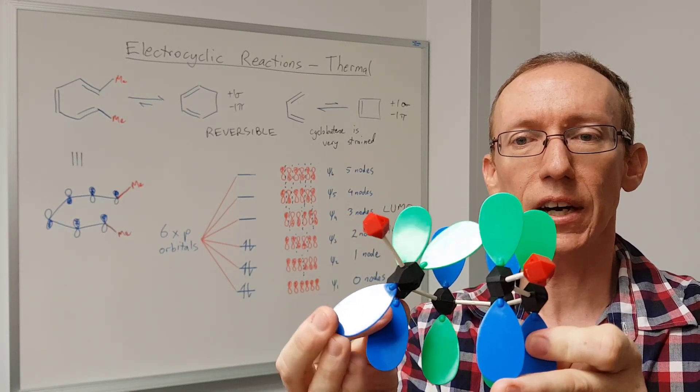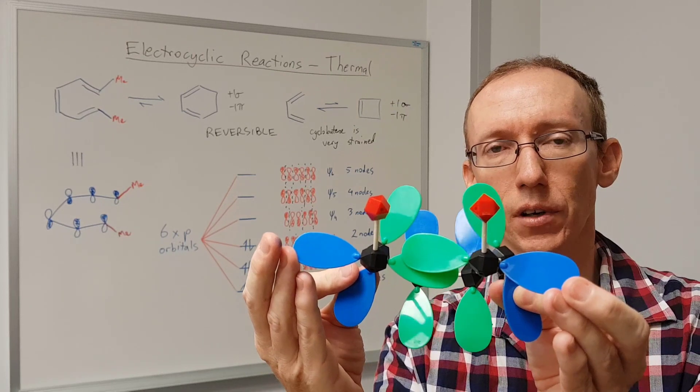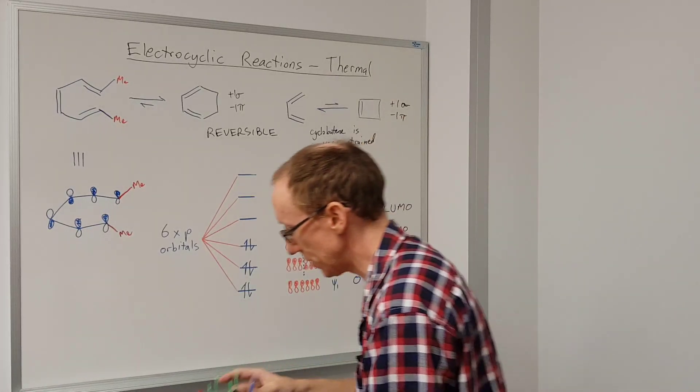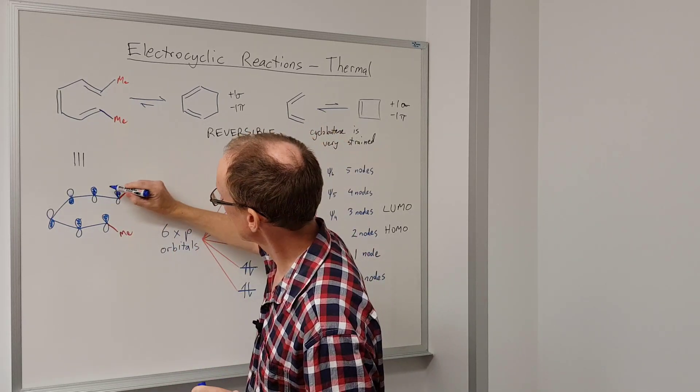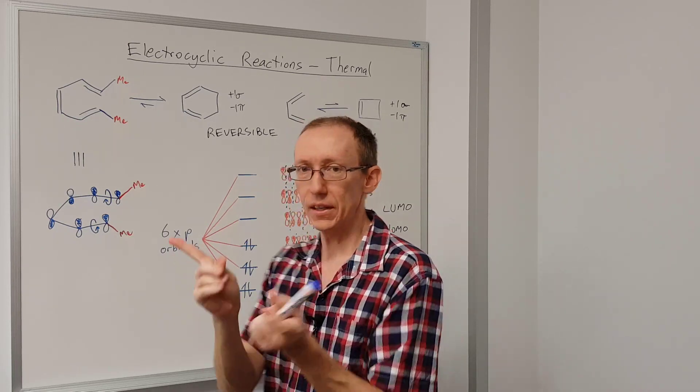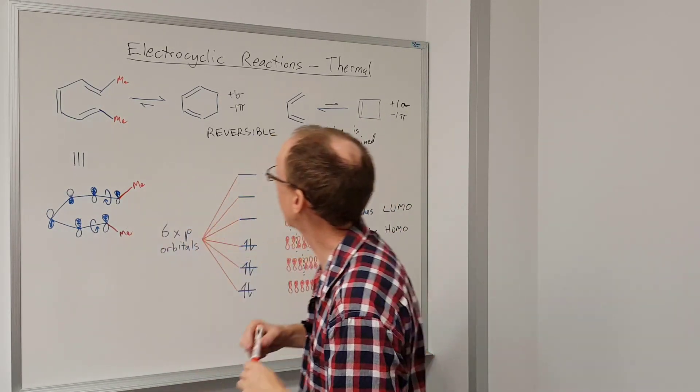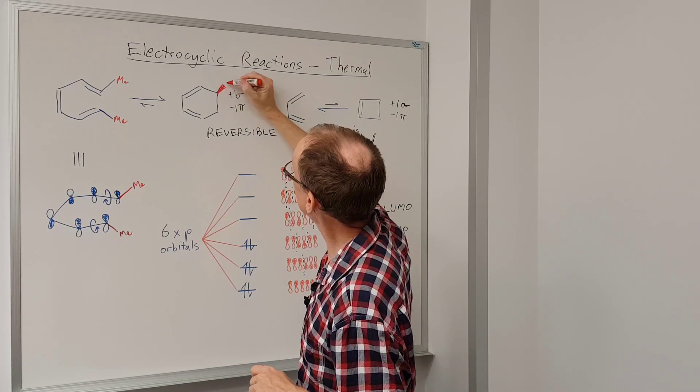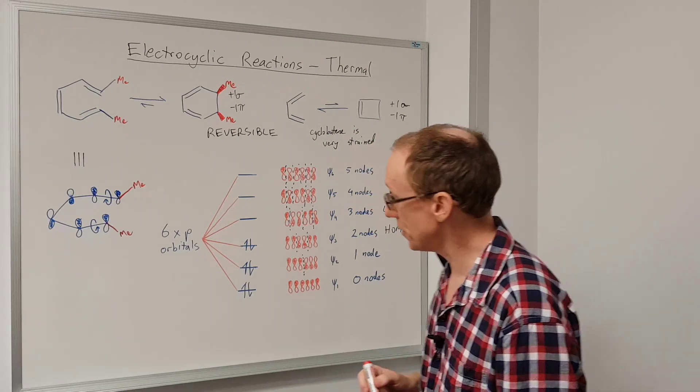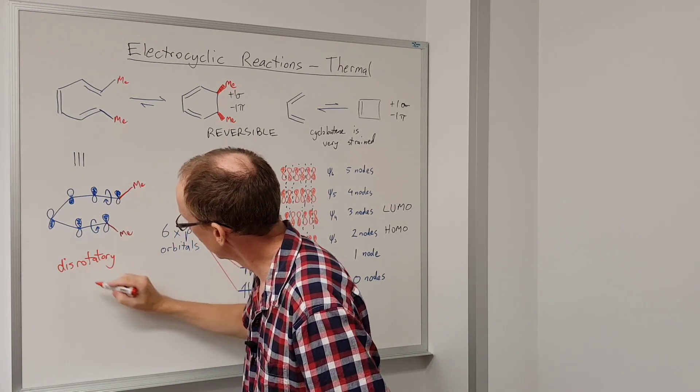So that rotation—one is rotating in one direction, the other one is rotating in the opposite direction—and we call this particular process a disrotatory process. Dis meaning dissimilar or different, so they're rotating in opposite directions. So if we want to show that on our diagram, we can show that one is rotating this way, and the other is rotating this way. And we're going to get them going towards each other on the same face of the ring. So therefore, our product of this reaction is going to be the cis dimethyl cyclohexadiene. And just a reminder, we call that a disrotatory process.